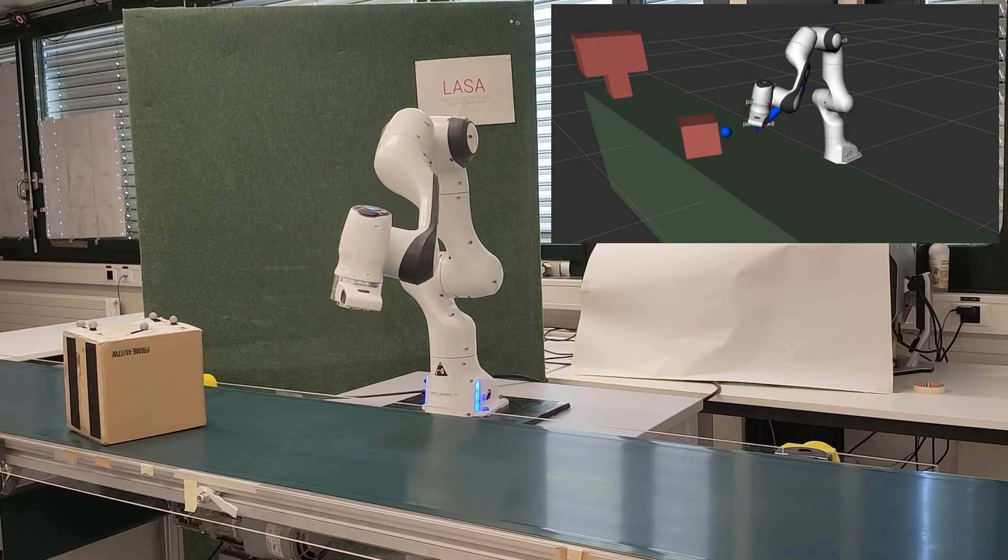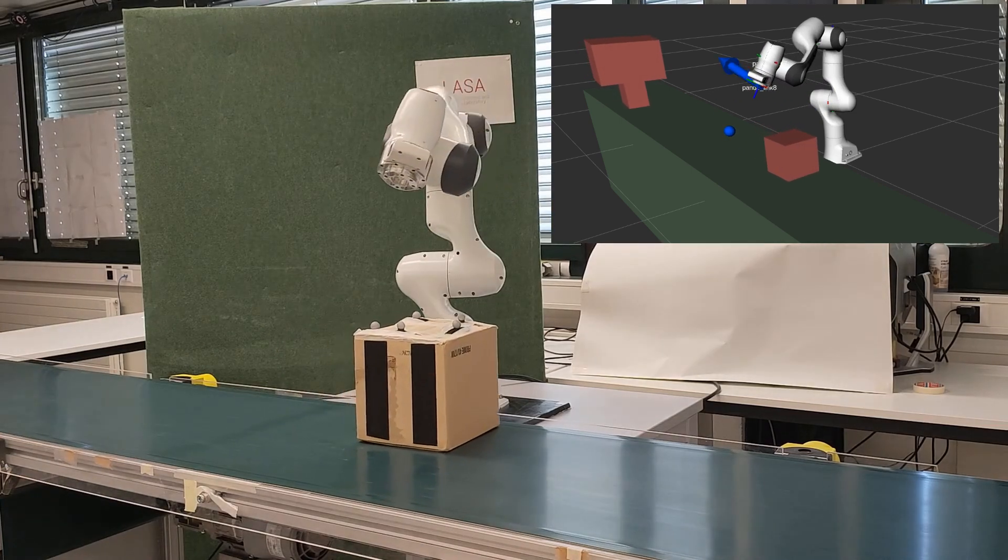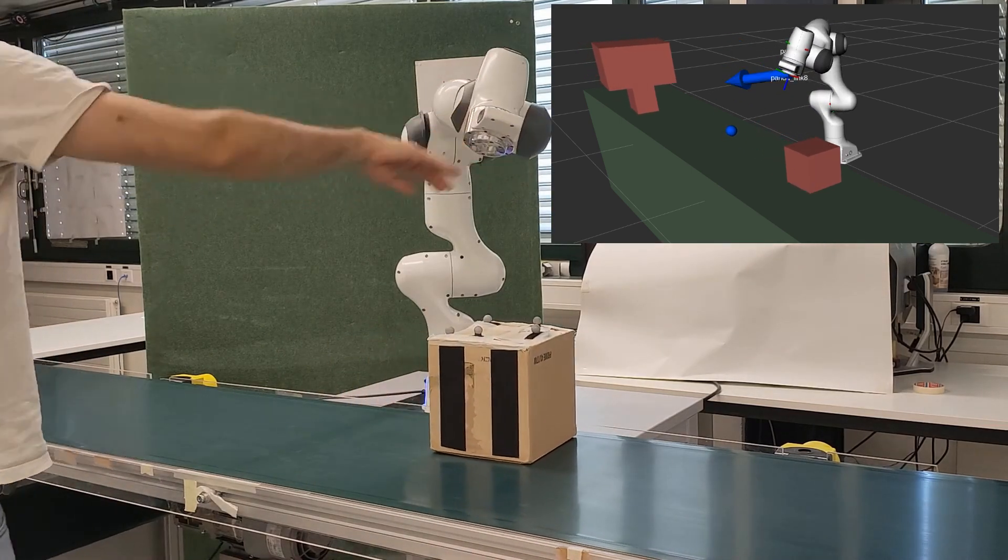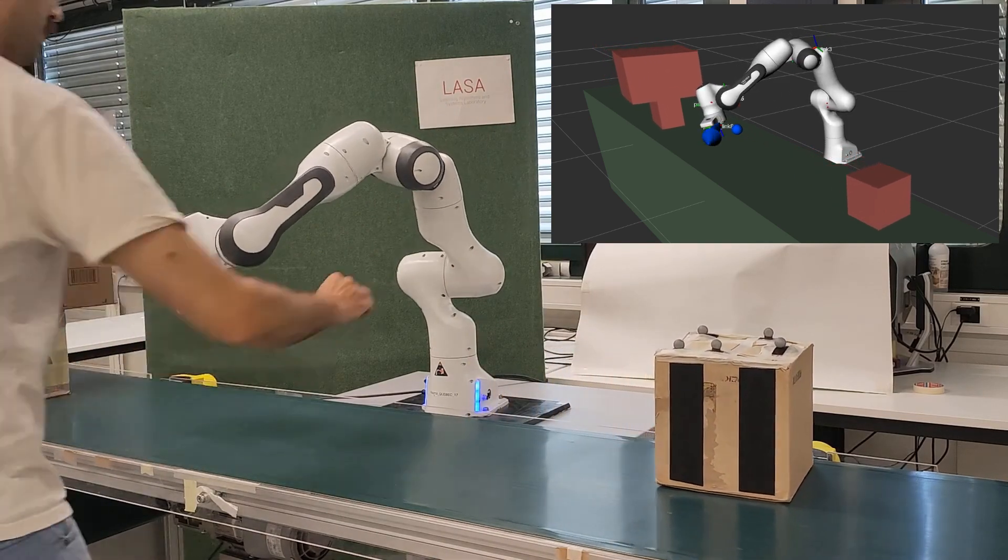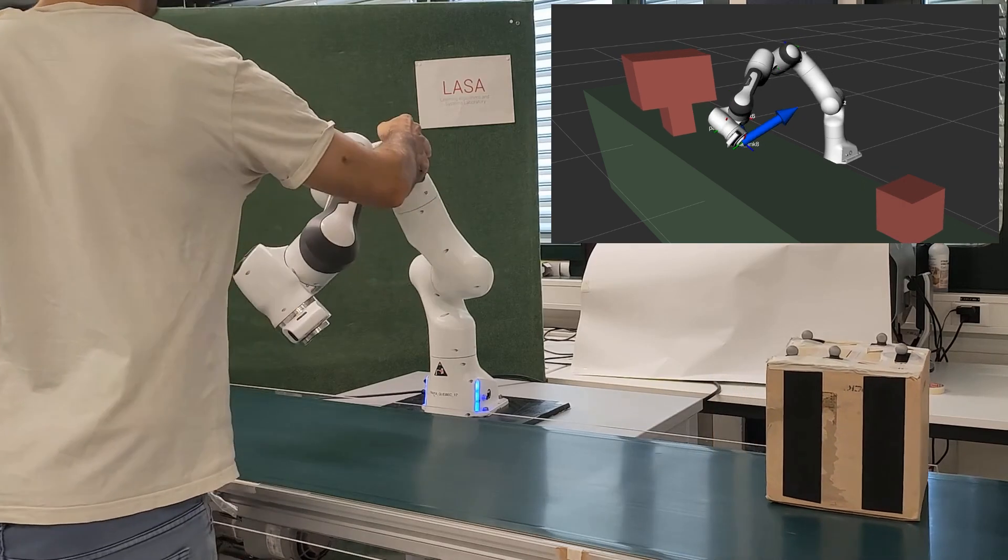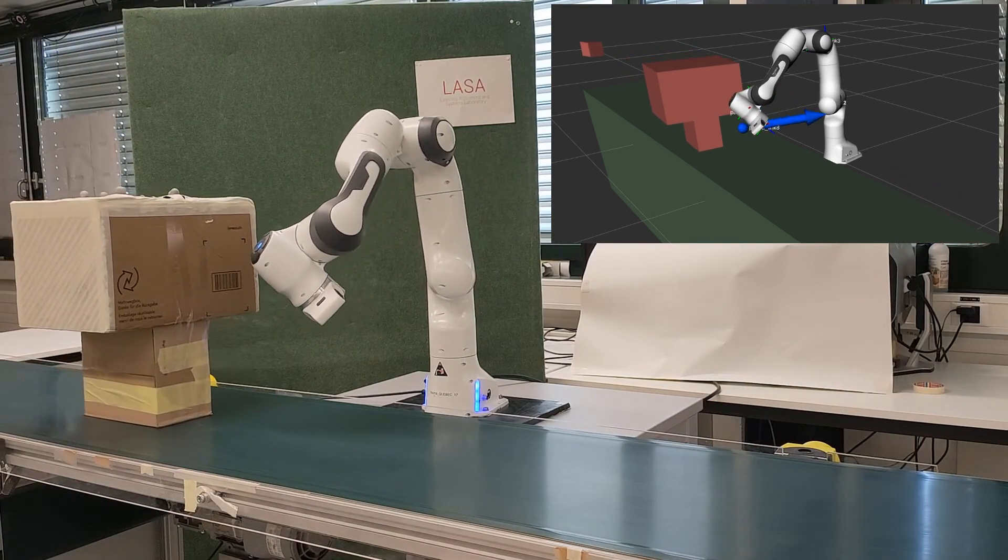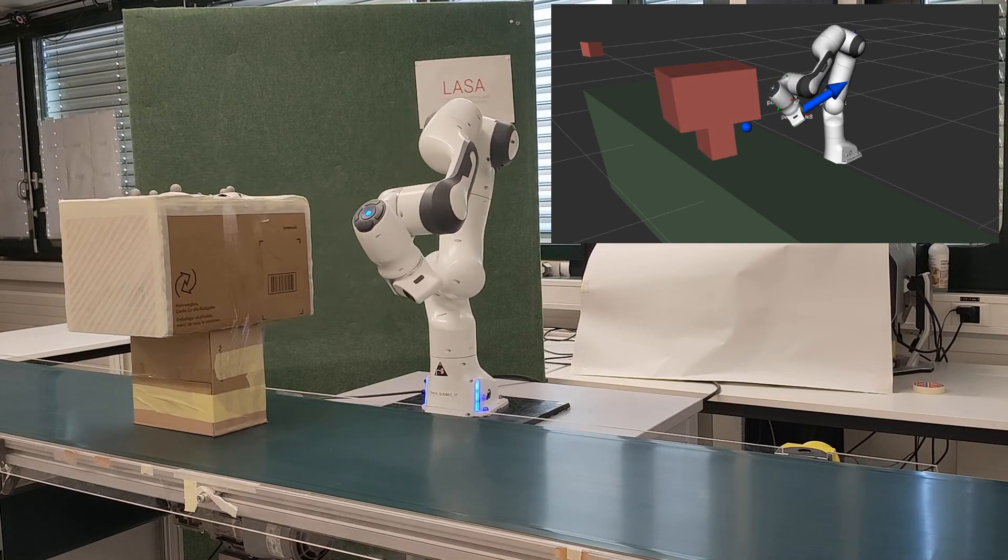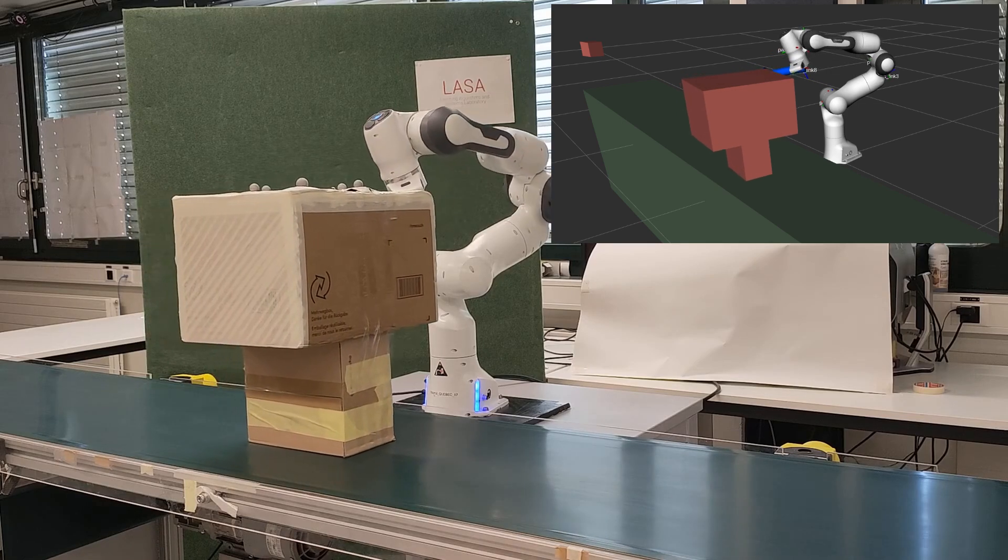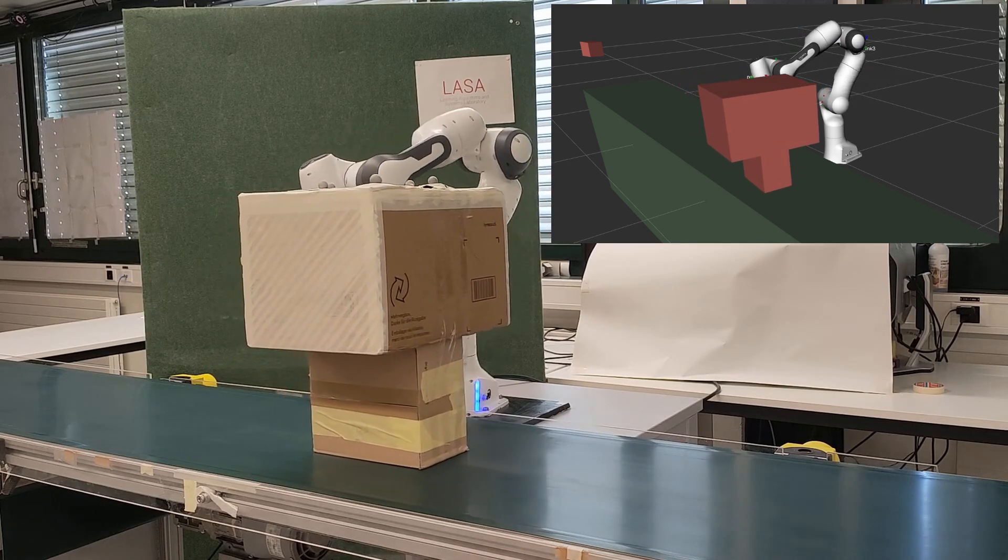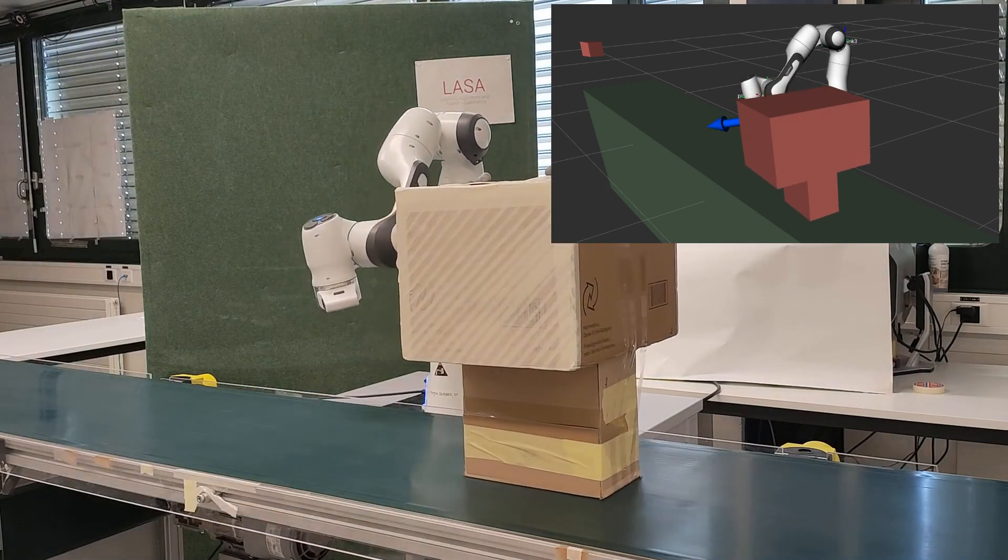The reactive algorithm demonstrates remarkable adaptability in response to changes in obstacles velocity and external disturbances. By evaluating the velocity solely based on the current state, it exhibits robustness to environmental variation. This capability enables the algorithm to quickly and effectively navigate through dynamic scenarios, making it highly responsive and reliable in real-time applications.